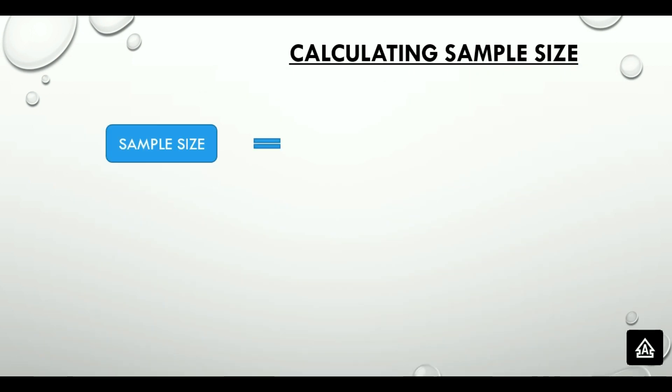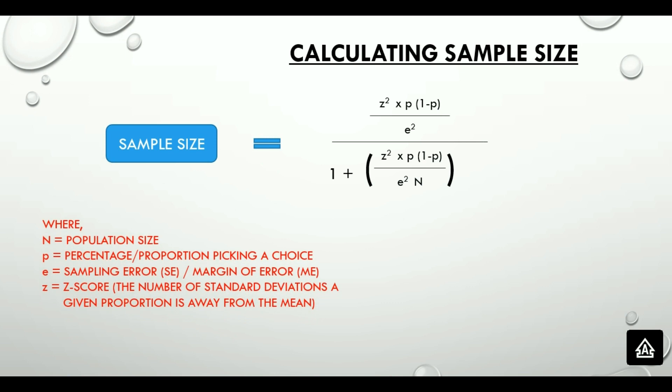Now, let's look at the formula to calculate the sample size. In the formula, Z is the Z-score. There is the number of standard deviations a given proportion is away from the mean. P is the percentage or the proportion picking a choice.